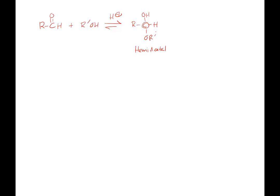You just have to find the carbon with the two oxygens. How do I know this is a hemi? Because it's OH and OR. How do I know it's an acetal? I look at the other two groups. If it's two R groups, it came from a ketone. If it's two H's, it came from an aldehyde. If it's an R and an H, it came from an aldehyde. So this is a hemi acetal because it's got OH, OR, R, and H — meaning it came from an aldehyde.